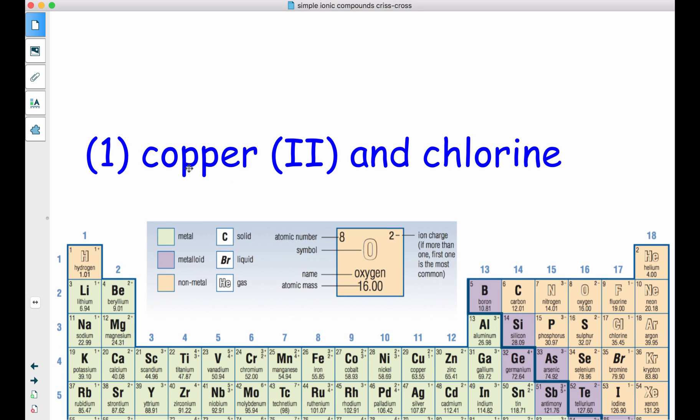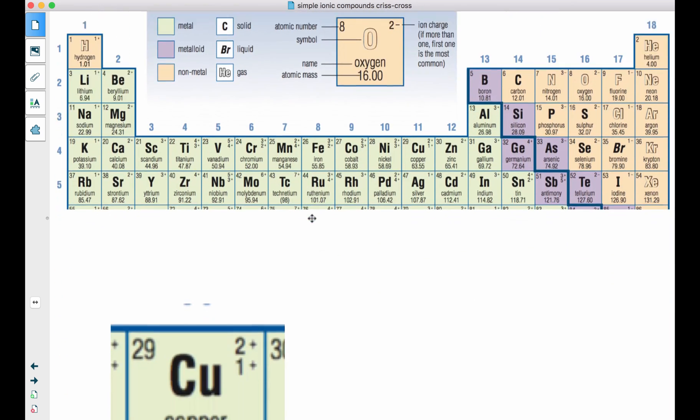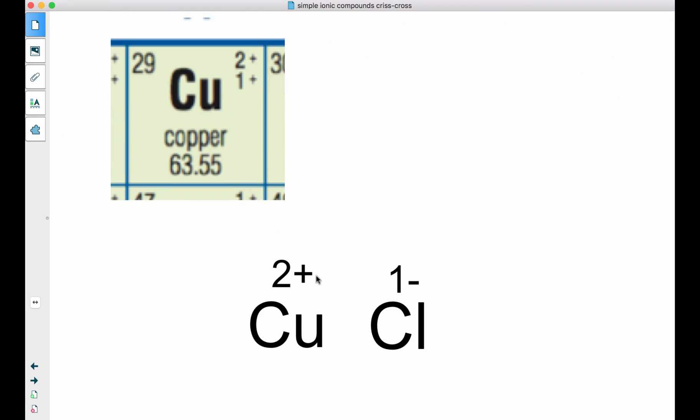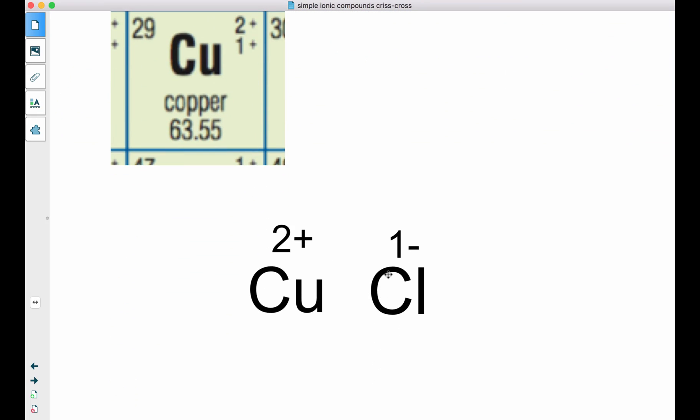We're doing copper (II) with chlorine. So the 2 right here with Roman numerals actually means that we're going to be using copper 2+. So we write it out: Copper 2+, Chlorine is the 1-. Now we can do our crisscross.